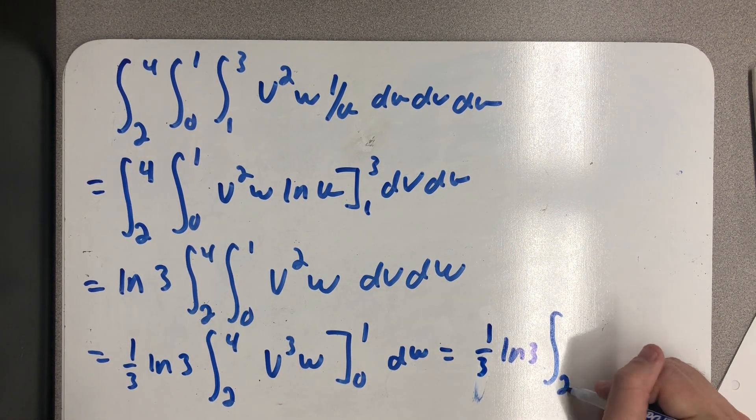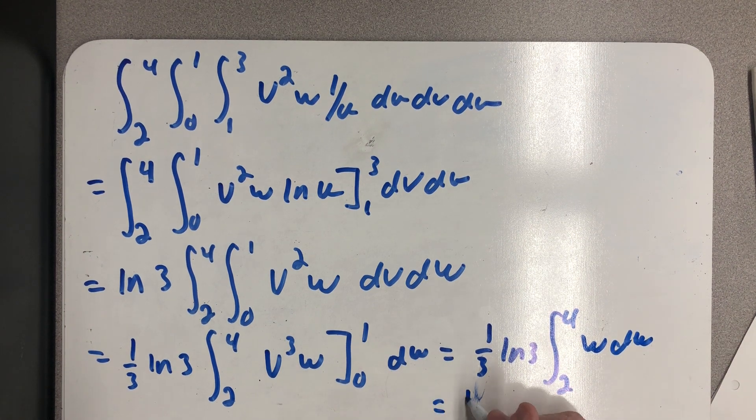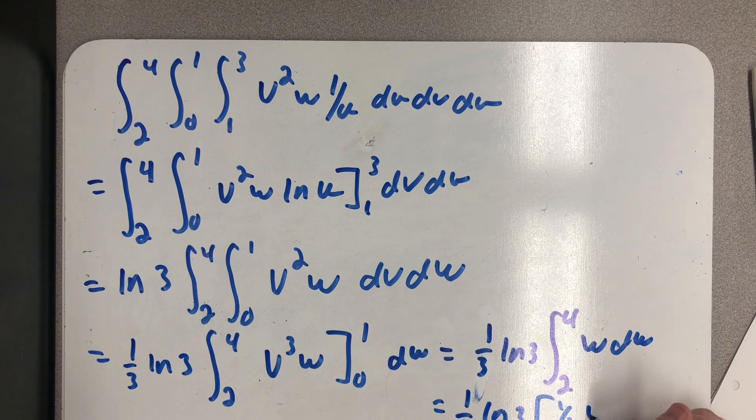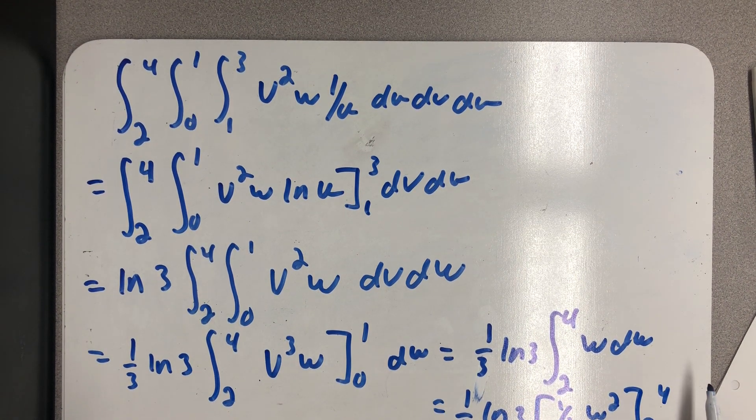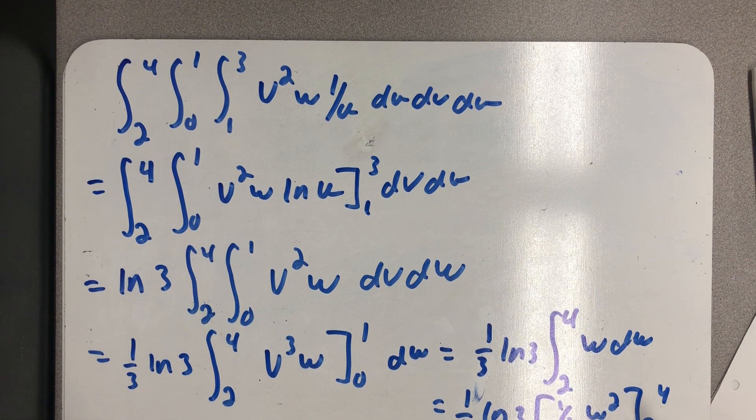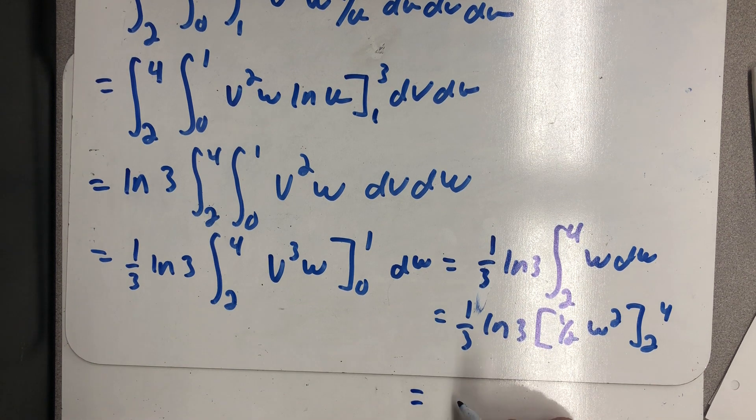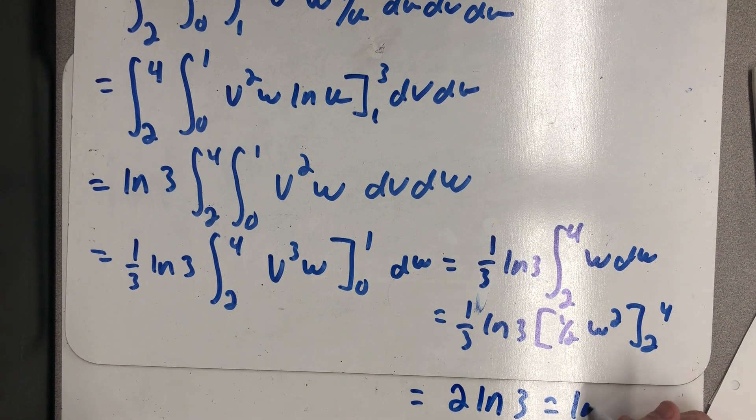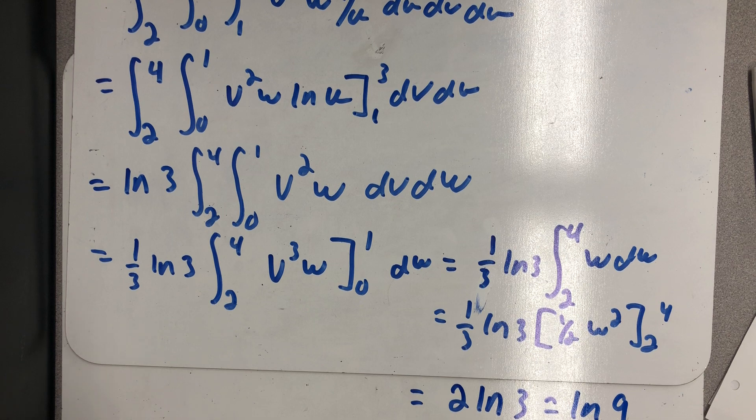And then an indefinite integral from two to four of w, dw. Evaluating this from two to four, I would end up with an eight minus two on the inside or six times that one-third. And I end up with two times the natural log of three. Or if you wanted to, you could write that as the natural log of nine. And there's our nice, happy solution.